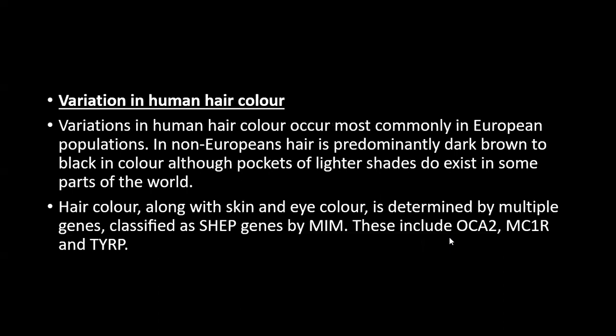Variation in human hair color occurs most commonly in the European population. In non-European populations, hair is predominantly either dark brown or black, although pockets of lighter shades do exist in some parts of the world. Hair color, along with skin and eye color, is determined by multiple genes classified as SHEP genes by MIM classification, and these SHEP genes include OCA2, MC1R, and TYRP.